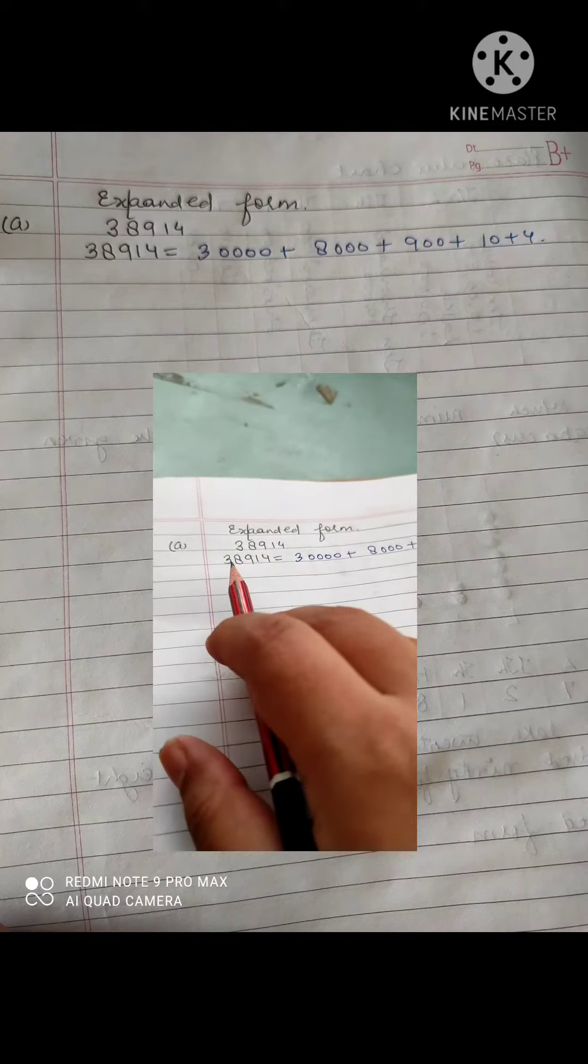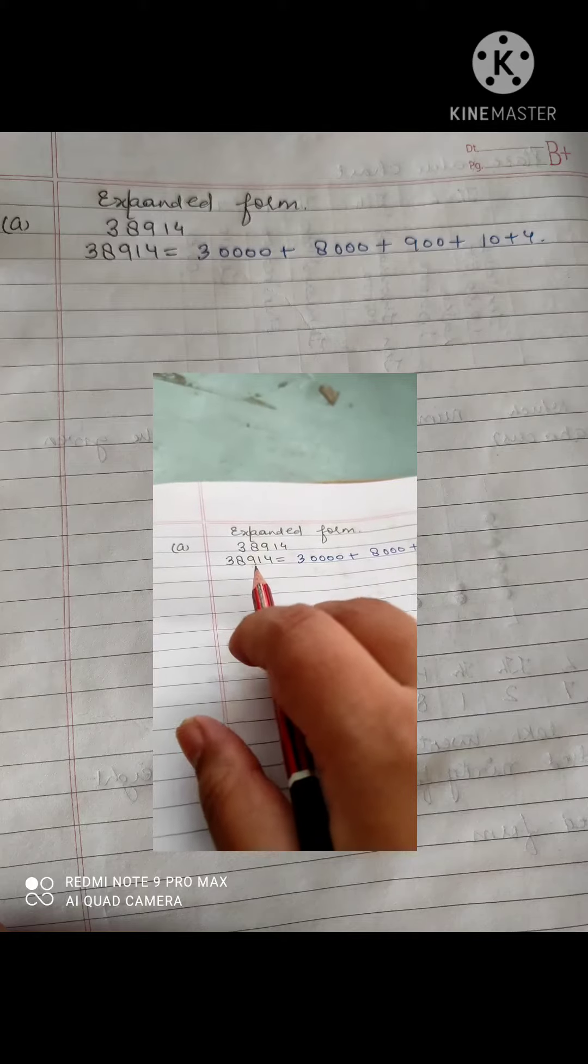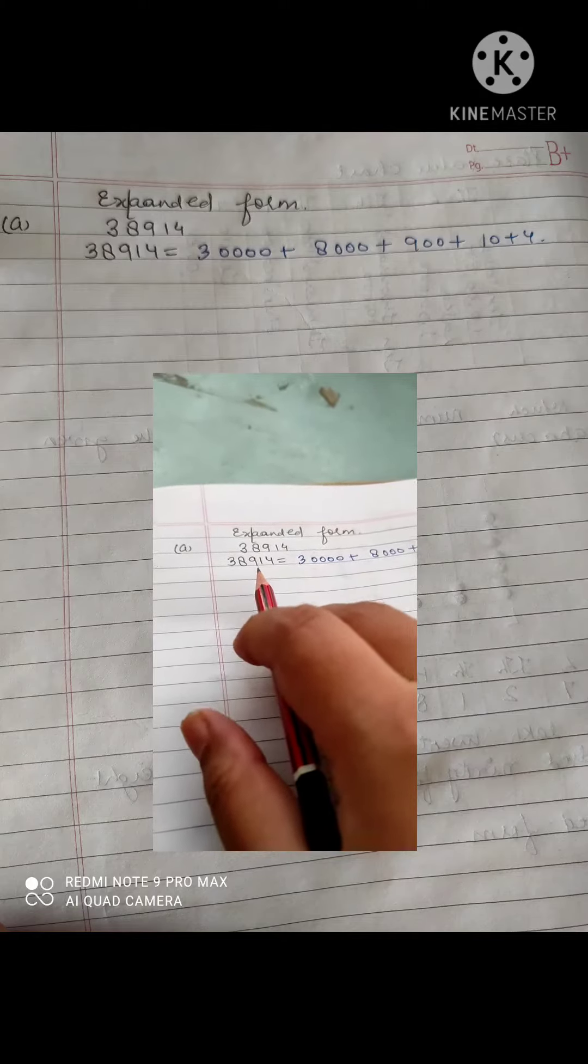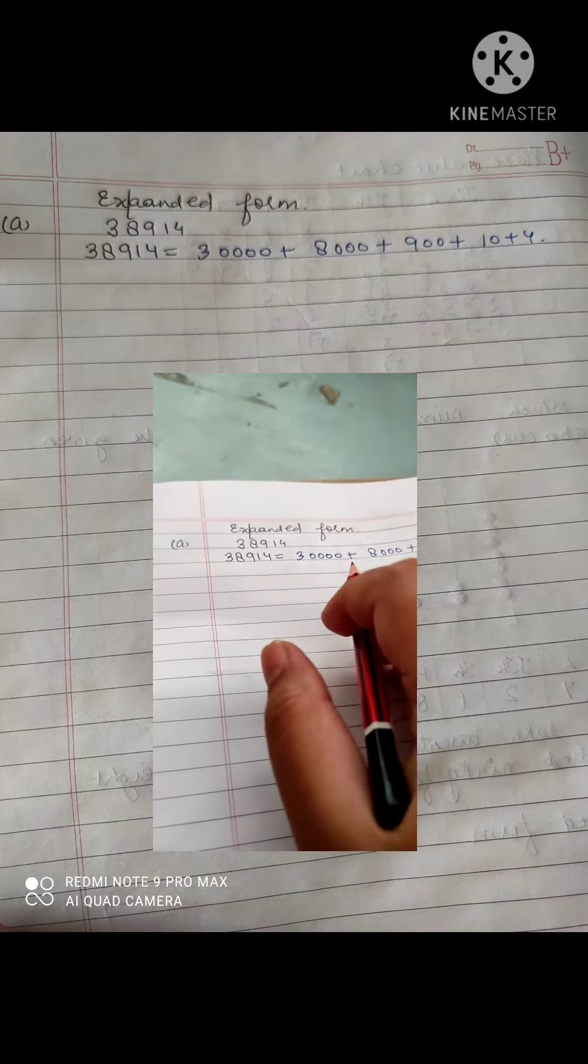I will tell you. Put 3 and after 3 you will count the digits: 1, 2, 3, 4. You will put the four zeros. After that you will put plus.